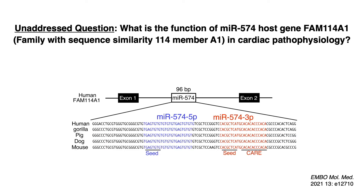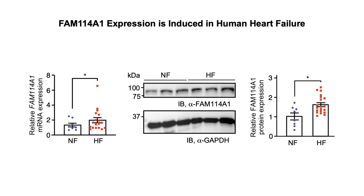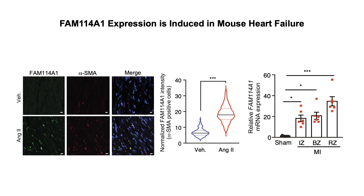Our main question is to understand the role of a novel MI-associated host gene of MIR574, namely family with sequence similarity 114 member A1, or FAN141, in cardiac pathological remodeling. FAN141 is genetically associated with MI as shown in human genome-wide association study data, and is induced in human failing heart samples and also in mouse angiotensin II and MI heart failure models.